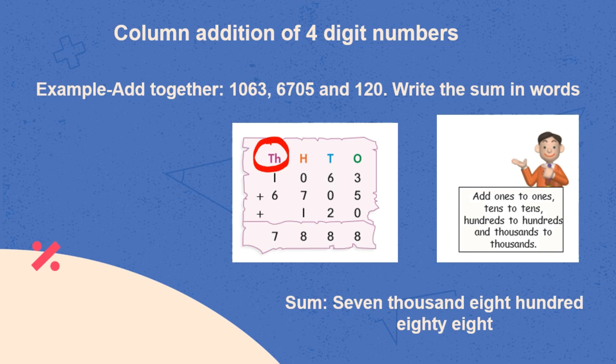By adding 1's to 1's, 10's to 10's, 100's to 100's and 1000's to 1000's, we get 7888. This is how we write in number names.